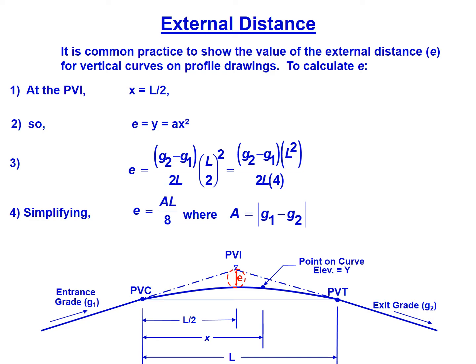We can plug in our term for A, G2 minus G1 over 2 times L, multiplied by L over 2 squared. That's our X is L over 2. Simplifying that, we get E equals A times L over 8, where A is equal to the absolute difference in grades G1 minus G2. That's the equation we can use for finding the external distance E.